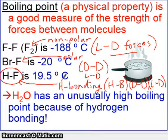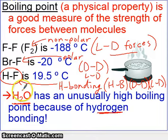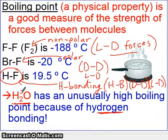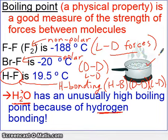Incidentally, water also has a high boiling point, even though it's a pretty tiny molecule, because water has hydrogen bonding. Water has two hydrogens directly on an oxygen, giving it very strong intermolecular forces. That's why water is a liquid and you have to get it pretty high in temperature to get it to boil.